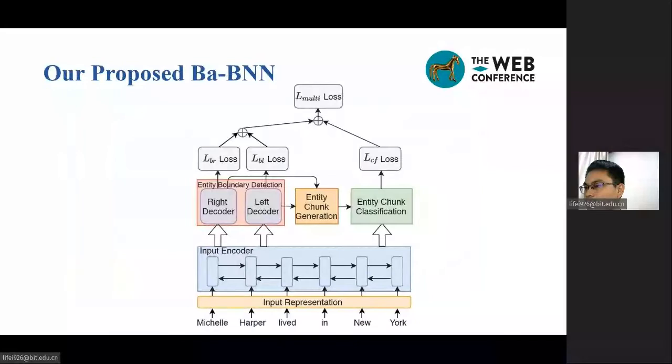In this paper, we propose a novel boundary-aware bidirectional neural networks called Ba-BNN, which integrates a suite of techniques for tackling the problems that occurred in recent neural-based NER approaches. The proposed model is operated as follows.